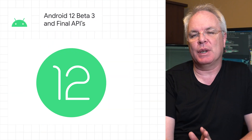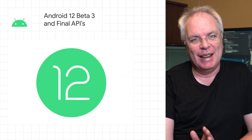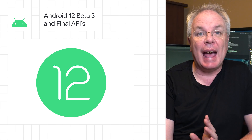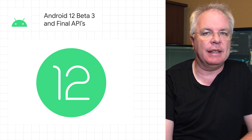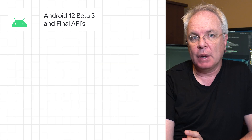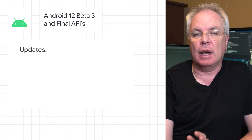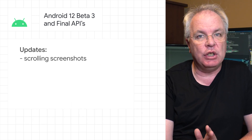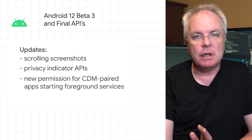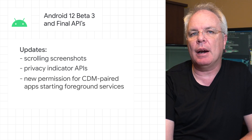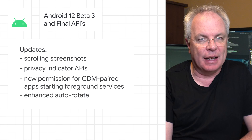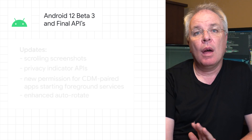The third beta of Android 12 is here, and it includes the final Android 12 APIs and the official SDK so you can start preparing for the final release. It also includes updates like scrolling screenshots, privacy indicator APIs, new permissions for CDM-paired apps, starting foreground services, and enhanced auto-rotate.